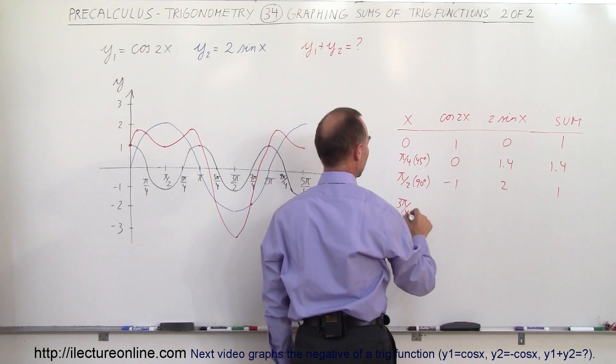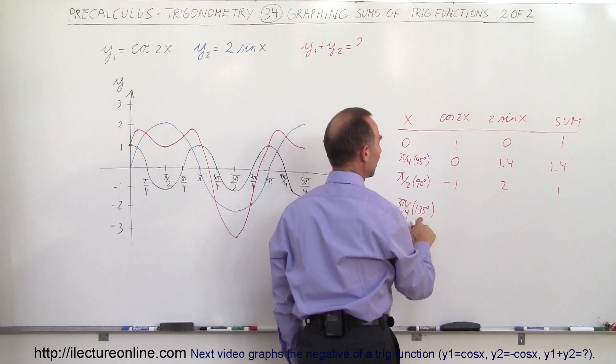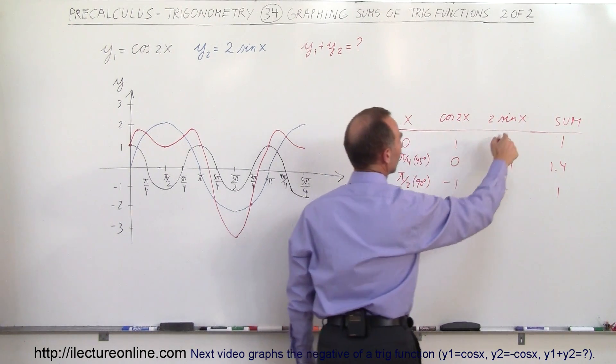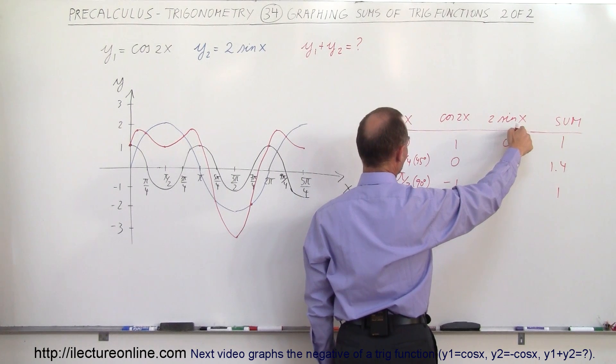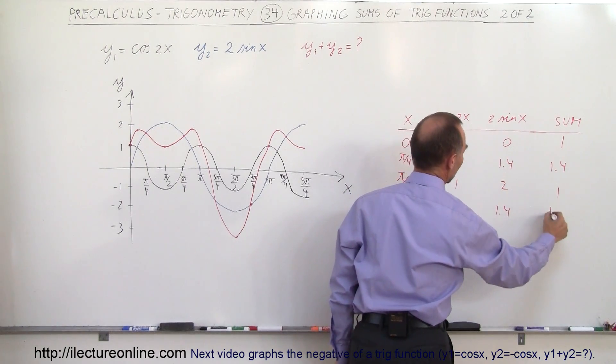So 3 pi over 4, that would be at 135 degrees. Twice that would be 270 degrees. The cosine of 270 is 0. The sine of 135 is the square root of 2 over 2, times 2, that would be 1.4. Add it together, you get 1.4.